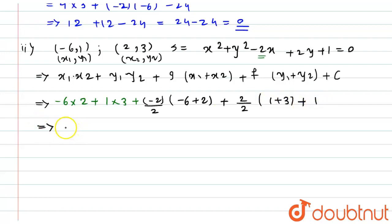So this implies -6 to the -12. This will become 3. Then this 2 will get cancelled out. This will become -1 into -4 which becomes +4. Then this 2 will get cancelled out. It will also become +4 plus 1.